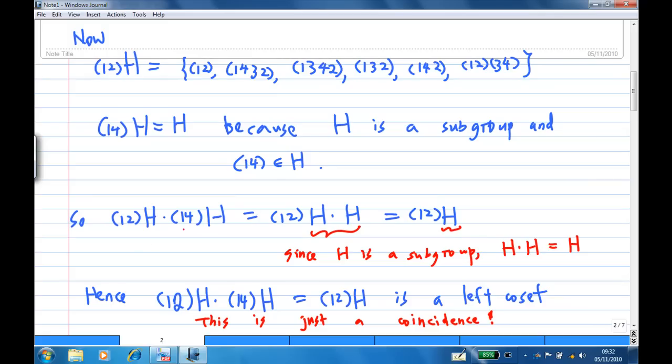So (12)H times (14)H is the same as (12)H times H. Now since H is a subgroup, so H is closed, so H times H could be H again. So eventually (12)H times (14)H gives you the left coset (12)H.